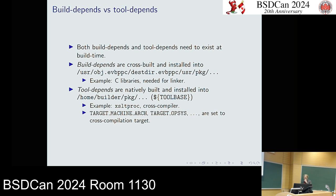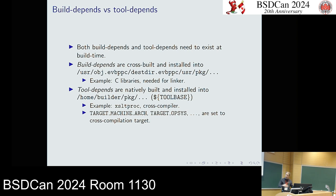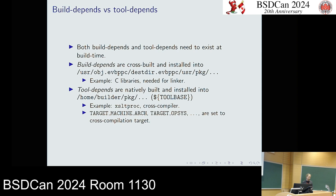There's a subtle distinction between build dependencies and tool dependencies. Build dependencies have to go into the cross destdir and be cross-built for use by a linker or compiler alongside your source code. Tool dependencies are executed on the build host, and can also be configured as cross-compilers themselves — a few packages like libtool are built this way. When pkgsrc recursively builds a tool dependency, it sets variables like target_machinearch and target_opsys to let that package know it's being used for cross-compiling a NetBSD PowerPC application.